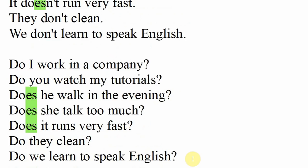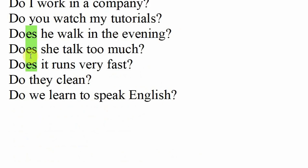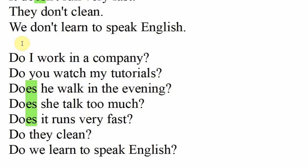Ab lete hain isi ki interrogative form. I work in a company - interrogative mein: Do I work in a company? Toh sirf aap ne I work in a company ke aagay 'do' laga diya - Do I work in a company? Aur aakhir mein question mark se end kerti hain sentence ko. Do you watch my tutorials? Ab simple tense mein he ke saath 'walks' tha, verb ke saath 's' lagtat tha: He walks in the evening. Lekin interrogative form mein woh 's' do ke saath lag gya aur woh 'does' ban jata hai: Does he walk in the evening?